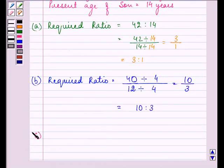Proceeding on with the C part. Here, the condition given to us is we need to find out the required ratio, age of father after 10 years. So after 10 years, right now he is 42 years old.